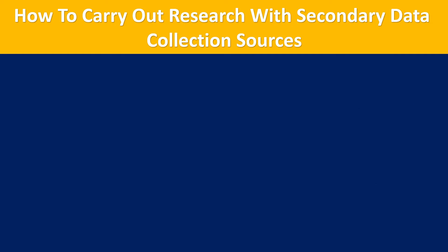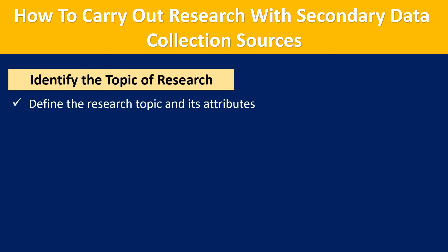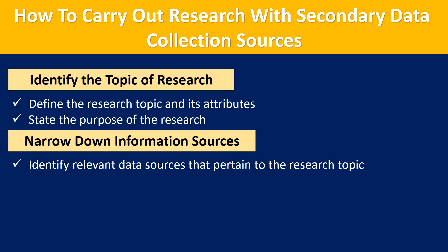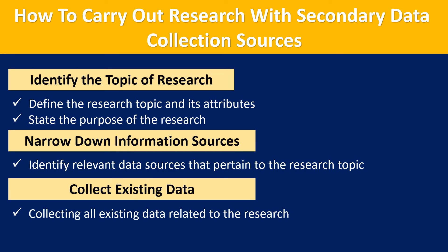How to carry out research with secondary data collection sources: First, identify the topic of research — define the research topic and its attributes, and clearly state the purpose of the research. Then, narrow down information sources by identifying relevant data sources that pertain to the research topic. Next, collect existing data by accessing and collecting all existing data related to the research from those identified sources.